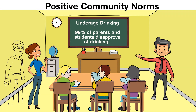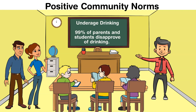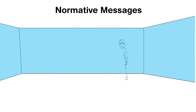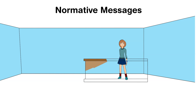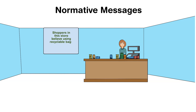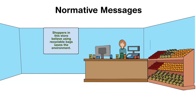But in addition to positive community norms, marketers also use normative messages. Normative messages seek to influence a behavioral change. The goal is to get people to conform so they feel liked or accepted by their peers. For example, your favorite supermarket might put up a sign that states: 'Shoppers in this store believe that reusing shopping bags is a worthwhile way to help the environment. We thank you for helping the environment and continuing to reuse your bags.'